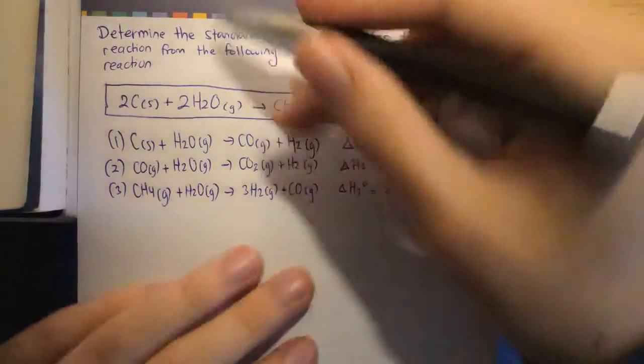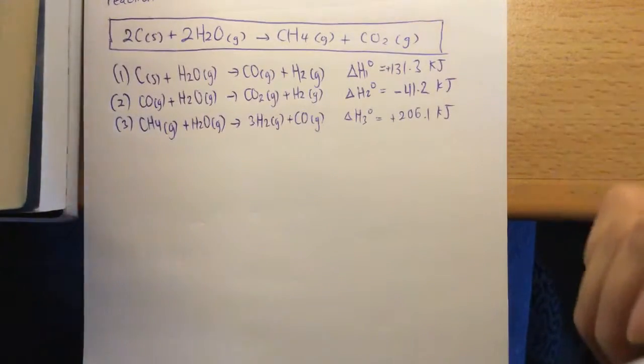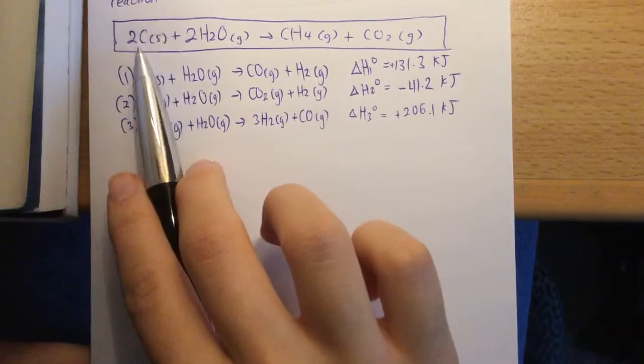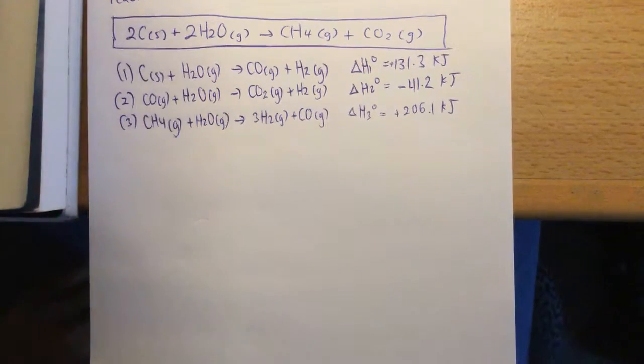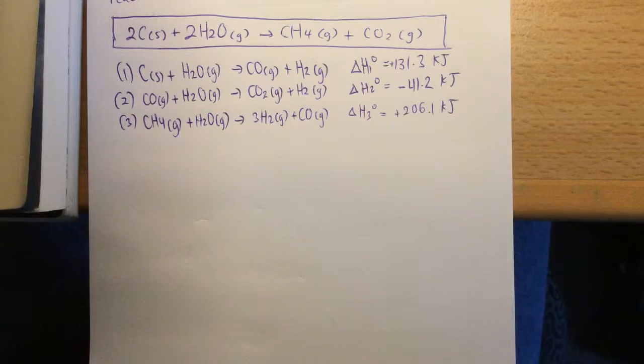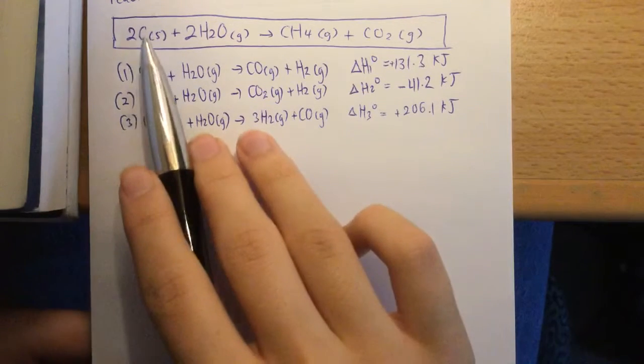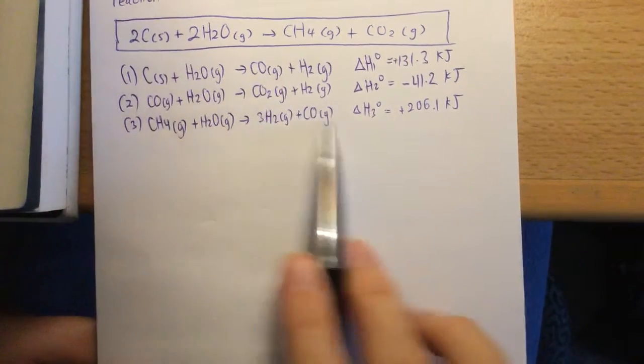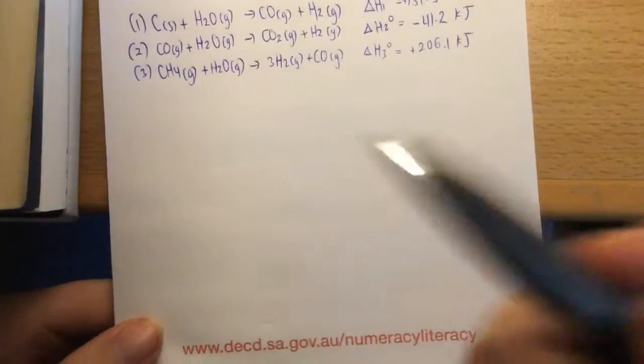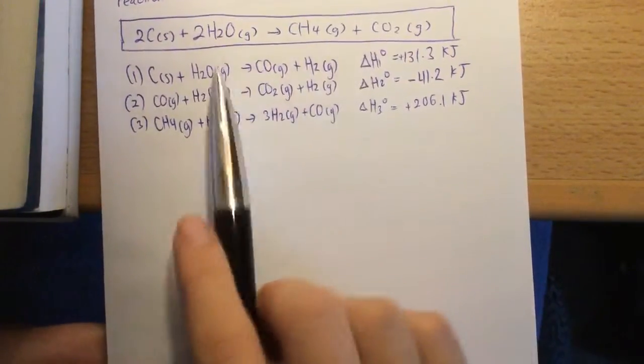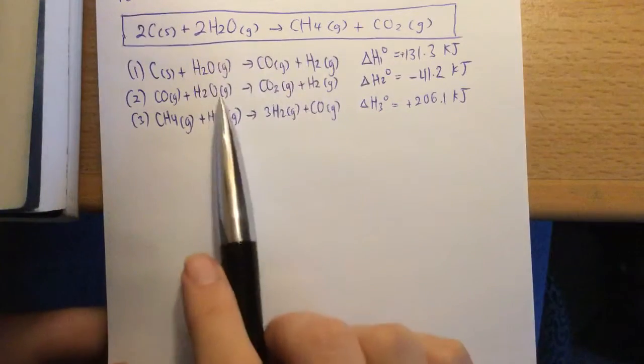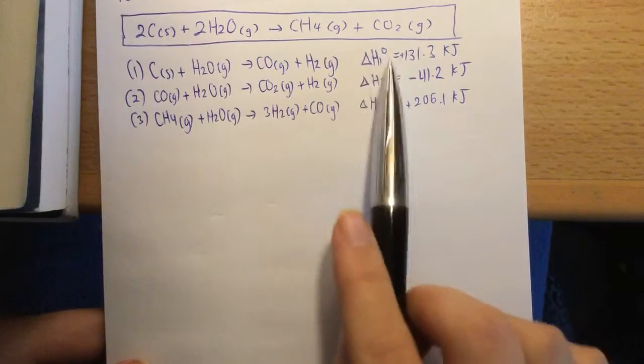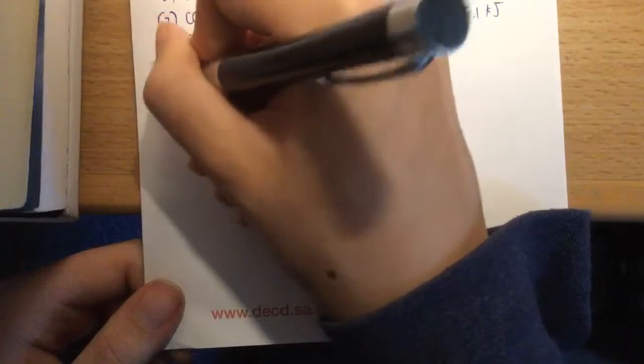We're going to have a go at solving this one now, and in order to do this we need to have a look at what the left hand side is. We can see here that we have two lots of this C, which is the carbon or graphite in solid form, and we can see that there's an equation on the left hand side here with C, and there's no other C in the other equations. So our very first thing we must have is we must take two lots of this delta H1 in order to find our overall delta H.